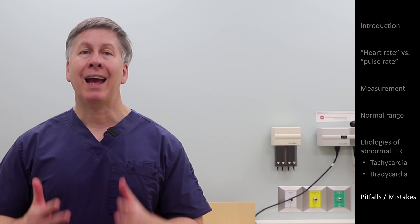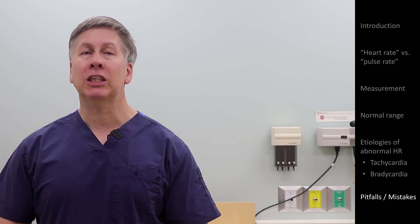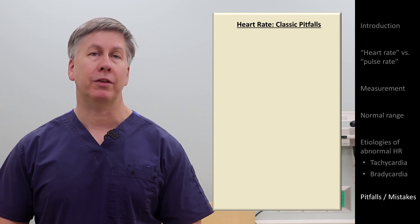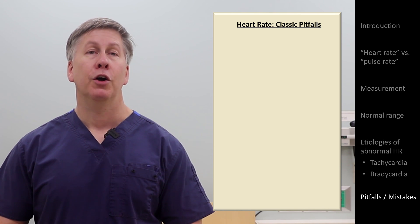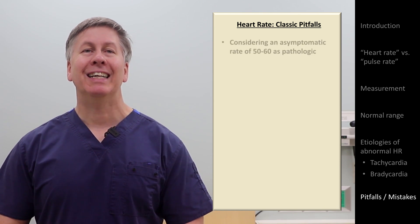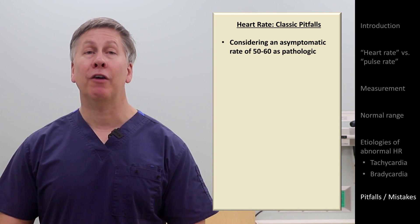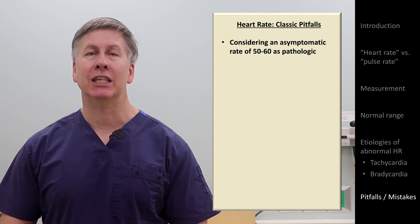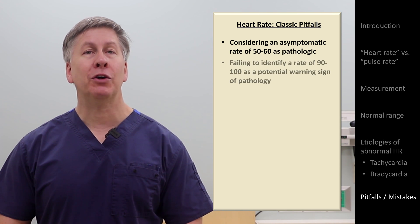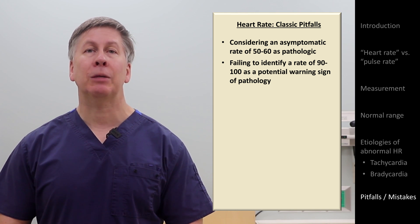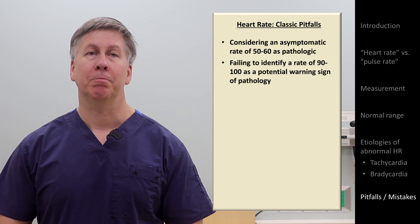I'm going to end with some classic pitfalls or mistakes when interpreting a patient's heart rate. First, as extensively discussed, considering an asymptomatic rate of 50–60 as pathologic, or failing to identify a rate of 90–100 as a potential warning sign of pathology.